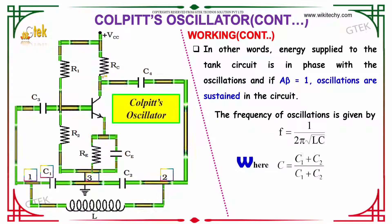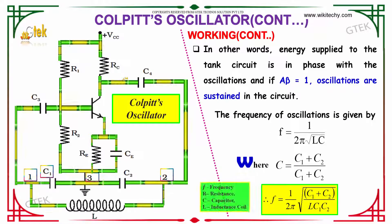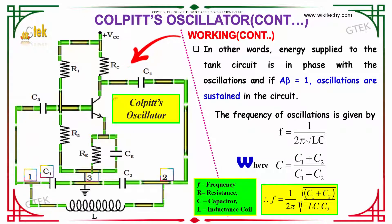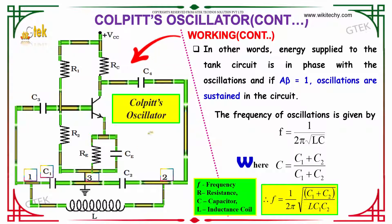In other words, the energy supplied to the tank circuit is in phase with the oscillations. And if Aβ is equal to 1, oscillations are sustained in the circuit.